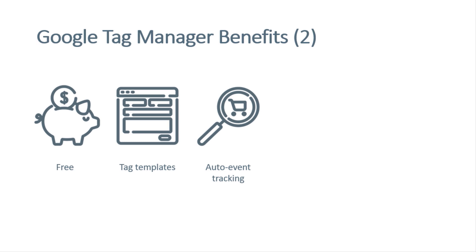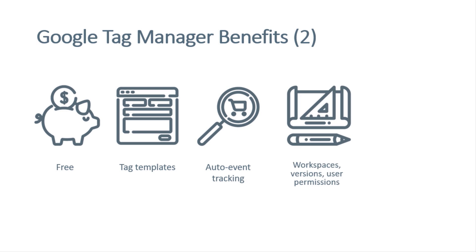Google Tag Manager offers auto event tracking functionality, which means you can track certain interactions with built-in functionality in GTM — like clicks, scrolling, YouTube video interactions, or when an element appears on the screen. If the auto event tracking capabilities do not work in a certain case, you can find custom functionalities provided by various members in the GTM community. Multiple members of a team can work in a Google Tag Manager container at the same time. There are workspaces and versions, so if you publish changes and something goes wrong, you can revert to a previous version. You can also limit permissions of employees, colleagues, or partners — for example, allowing them to edit but not publish.